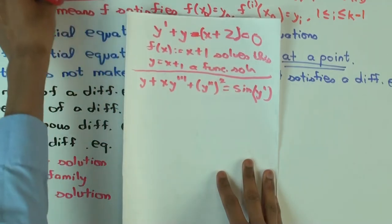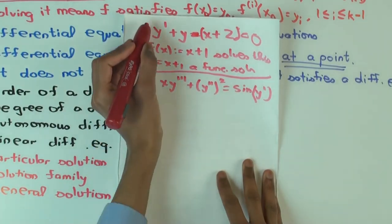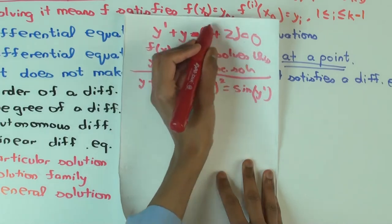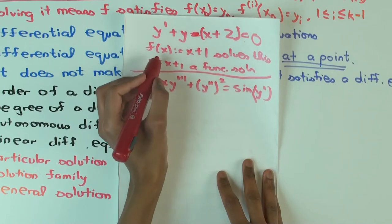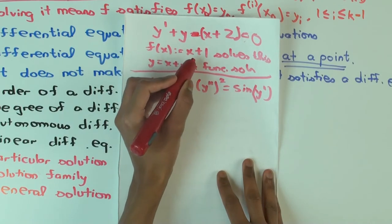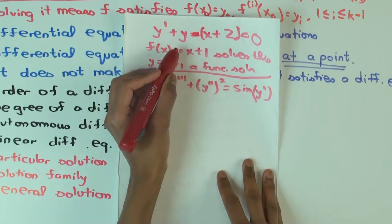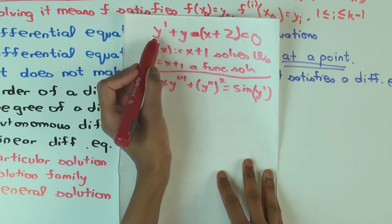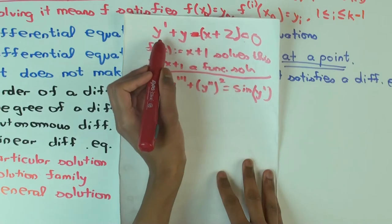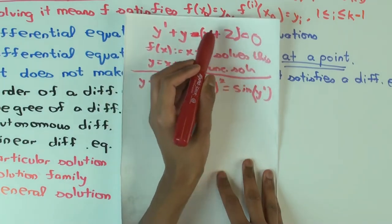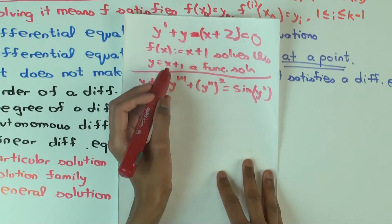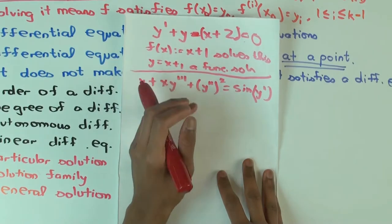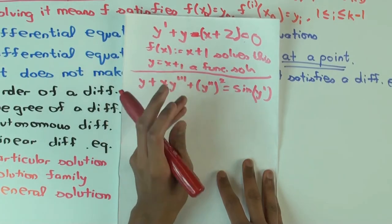I could write it like this, then capital F is just this whole expression. Now what's the solution to this differential equation? I'm claiming that f(x) = x + 1 solves this differential equation, which means when I put y = x + 1 and y prime as the derivative, this is true regardless of the value of x. When I put y = x + 1, I get 1 plus x plus 1 minus x plus 2 equals 0. It's true for all x. So y = x + 1 is a functional solution.